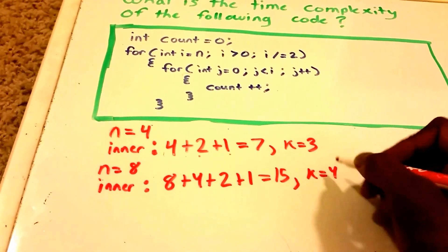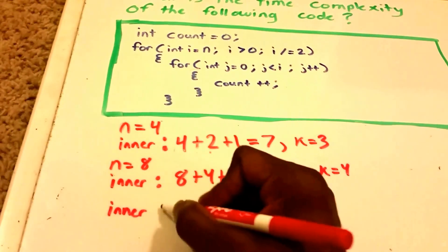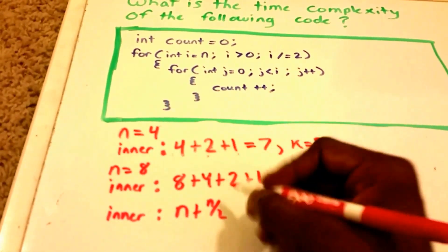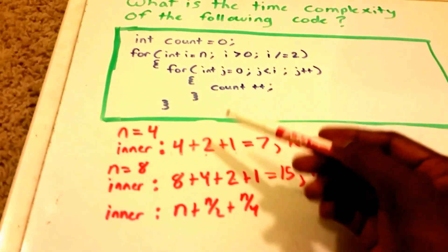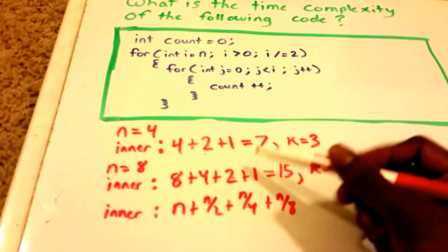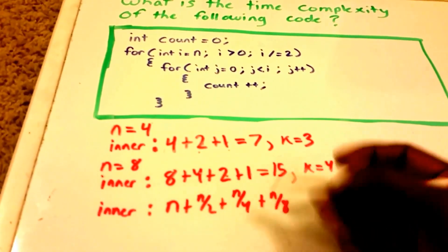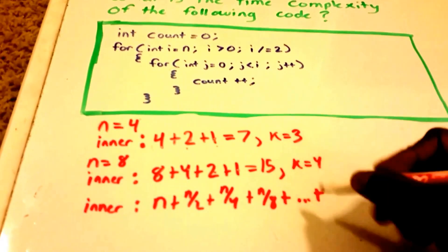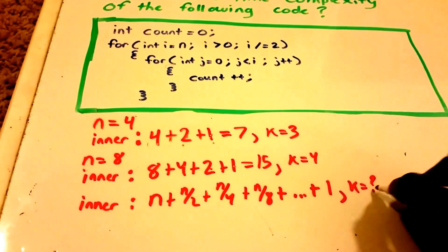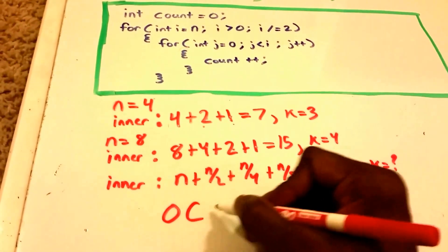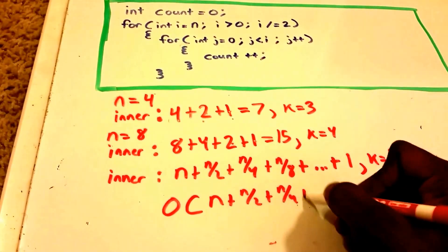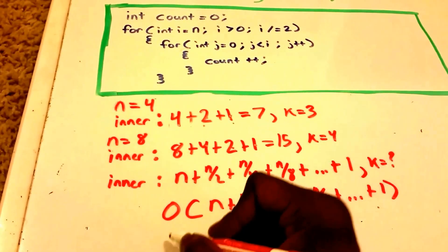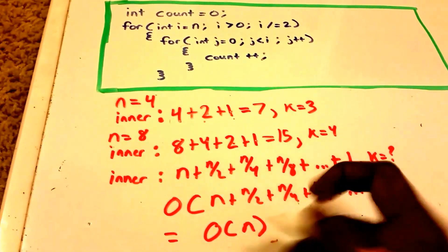We can see a pattern: the inner loop runs n + n/2 + n/4 + n/8 + ... + 1 times. For n=8 that's 8 + 4 + 2 + 1. The series continues as long as our value of n allows, stopping when we reach 1. So we can write the time complexity as O(n + n/2 + n/4 + n/8 + ... + 1), which equals O(n).